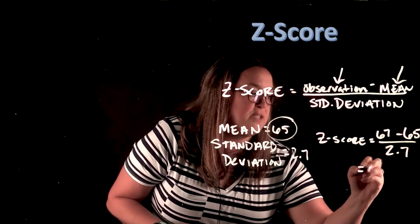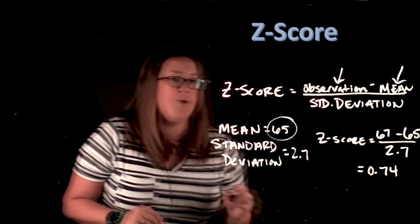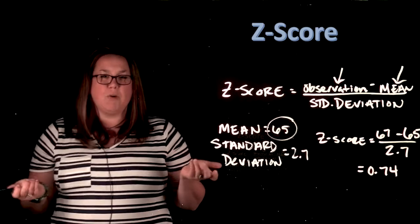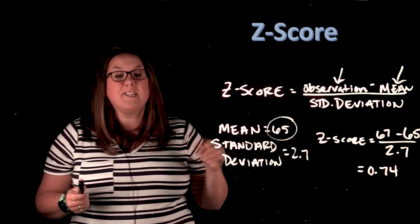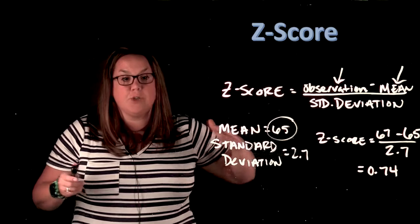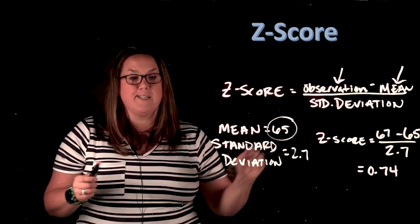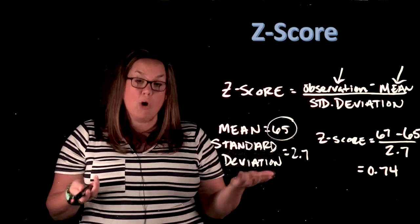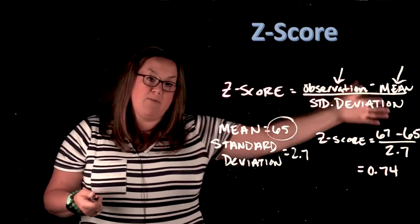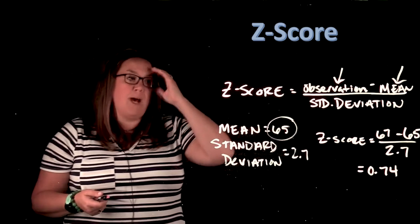So what does that mean? I am 0.74 standard deviations above the mean. So because I'm positive, it's above. So I'm taller than the mean, or I'm above or to the right of that mean on the curve.